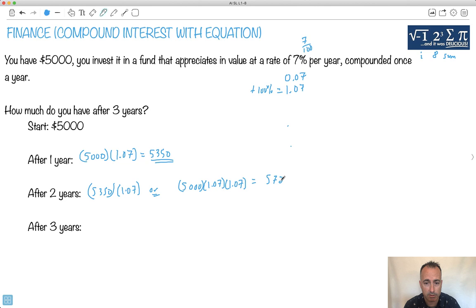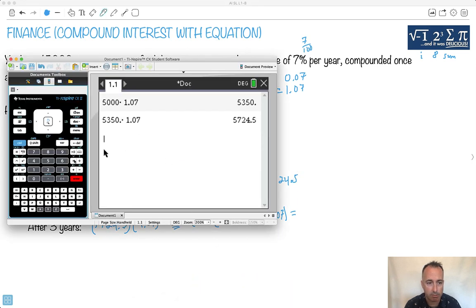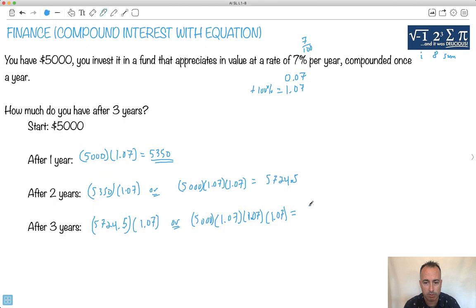Now what? I keep going one more time, obviously. So it's going to be 5724.5 times 1.07. Or I could have said it's 5,000 times 1.07 times 1.07 times 1.07. Let's see what I get then. I multiply that answer by 1.07, and then I have my answer is 6125.22. That's the amount of money I have here.